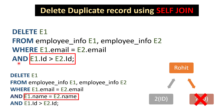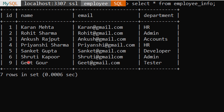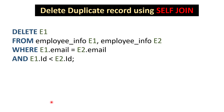After executing the query, the output says two rows affected. Checking the final table confirms there are no records with ID 7 or 8. If you want to delete the duplicate record with the comparatively smaller ID instead, just change the greater-than operator to less-than. Then Rohit with ID 2 and Sanket with ID 5 will get deleted. Let's execute — it says two rows affected.